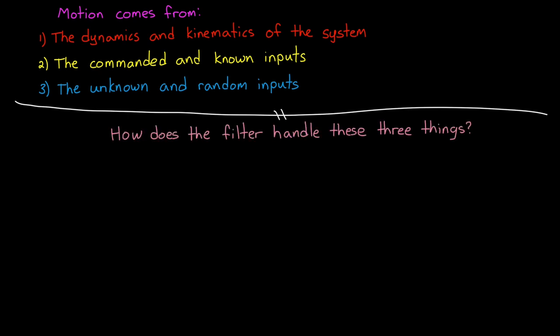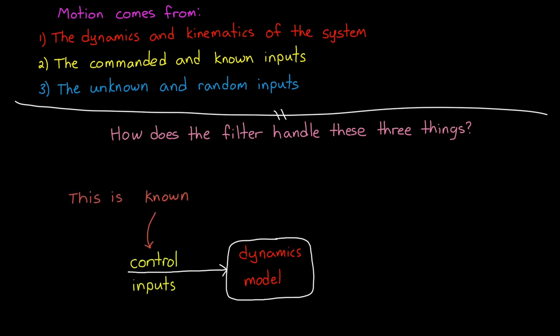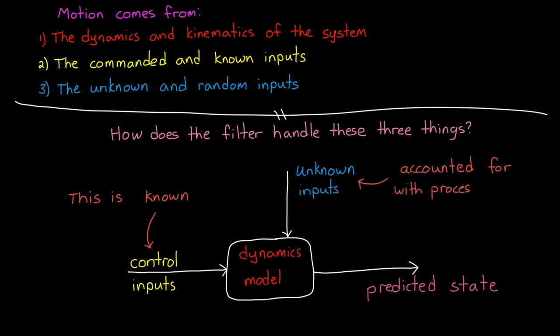So these are the three things that we need to take into account when predicting a future state. So how does an estimation filter do this? Well, we give the filter access to the dynamics in the form of a mathematical model. And if it's a system that you have control over, then the filter can have access to the control inputs as well. That is, you can tell the filter when you're commanding the system, and it can play those commands through the model to better the prediction. Now, the unknown inputs into the system, as well as uncertainty in the model itself, by definition can't be known, and therefore they only degrade the prediction. And we take this degradation into account with the filter process noise. The higher the process noise, the more uncertain you are about the prediction.